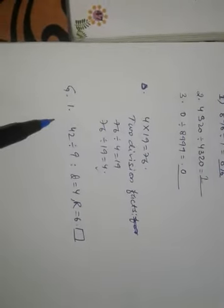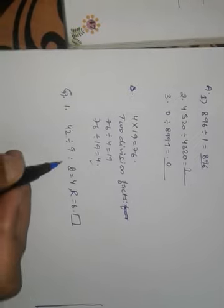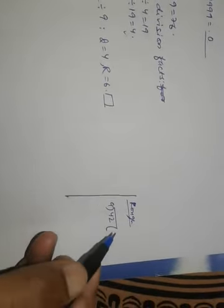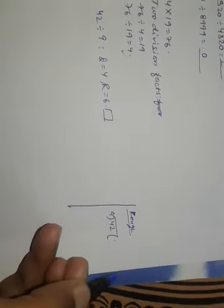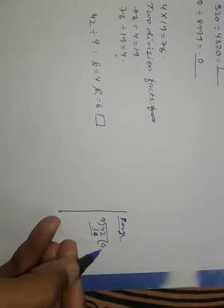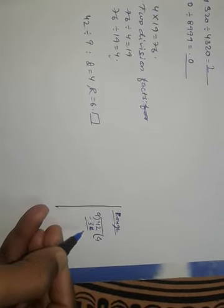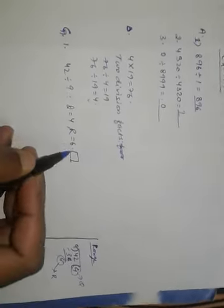For question g, the first question is 42 divided by 9. The quotient is 4 and the remainder is 6. In the rough section, check using the table of 9: 9 × 4 = 36, subtract from 42, and we get remainder 6. So quotient is 4 and remainder is 6 — this is correct. Solve all the remaining g number questions by yourself.